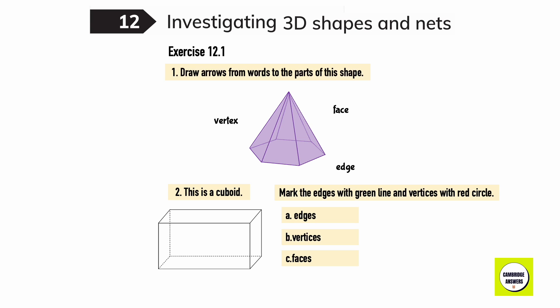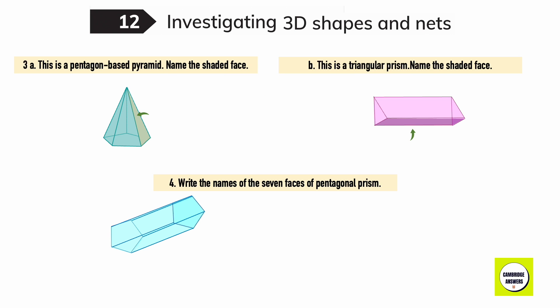Exercise 12.1: draw arrows from the words to the parts of the shape — face, edge, vertex. This is a cuboid. Mark the edges with a green line and the vertices with a red circle. How many edges are there? 12. How many vertices are there? 8. How many faces are there? 1, 2, 3, 4, 5, 6.